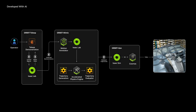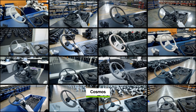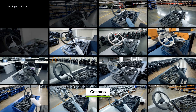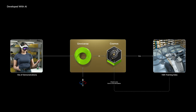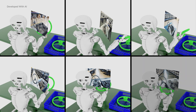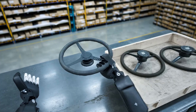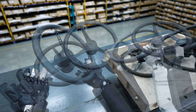Next, they use Groot Gen, built on Omniverse and Cosmos, for domain randomization and 3D-to-real upscaling, generating an exponentially larger dataset. The Omniverse and Cosmos multiverse simulation engine provides a massively scaled dataset to train the robot policy.